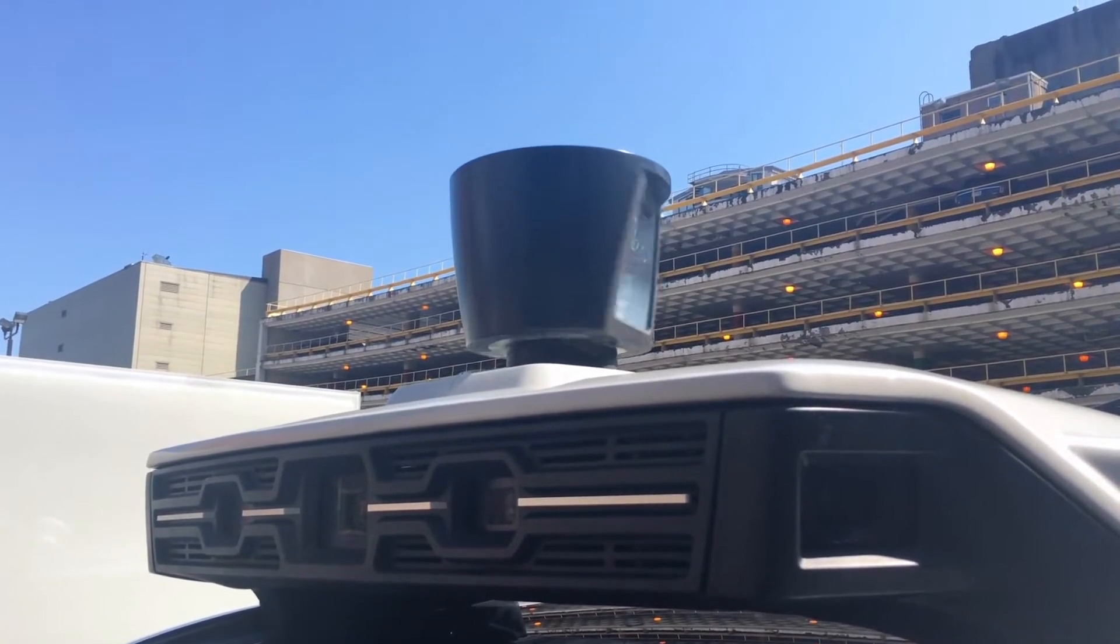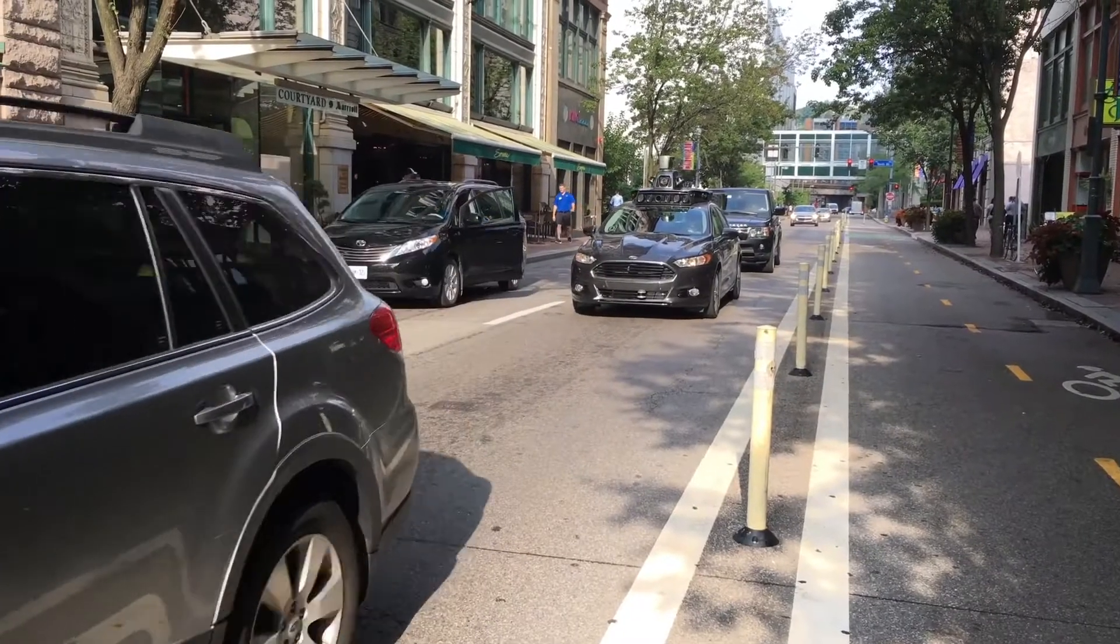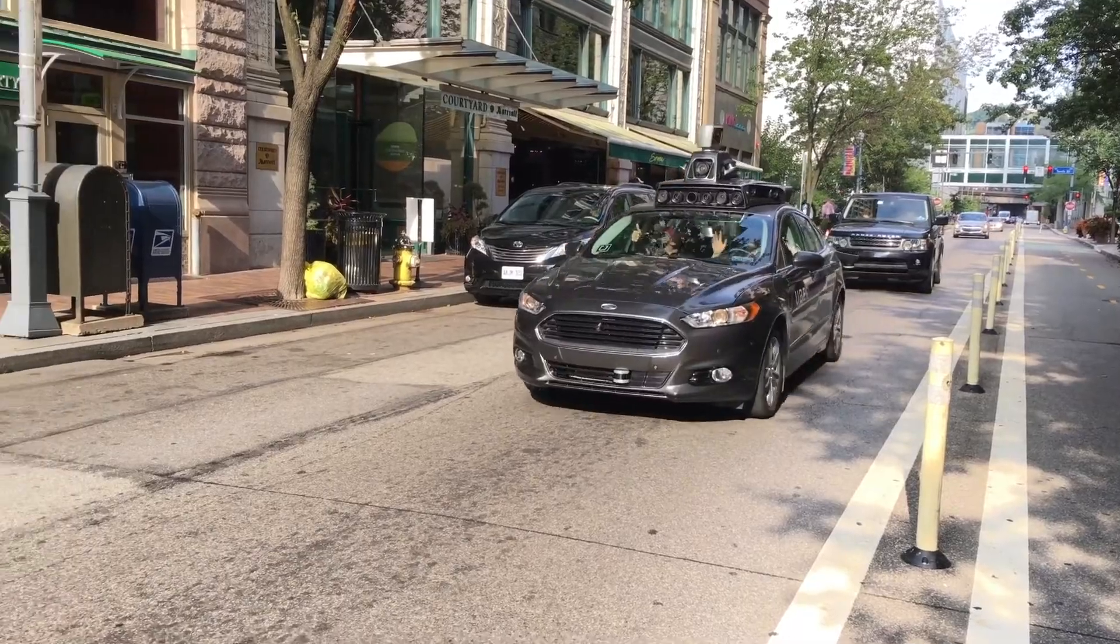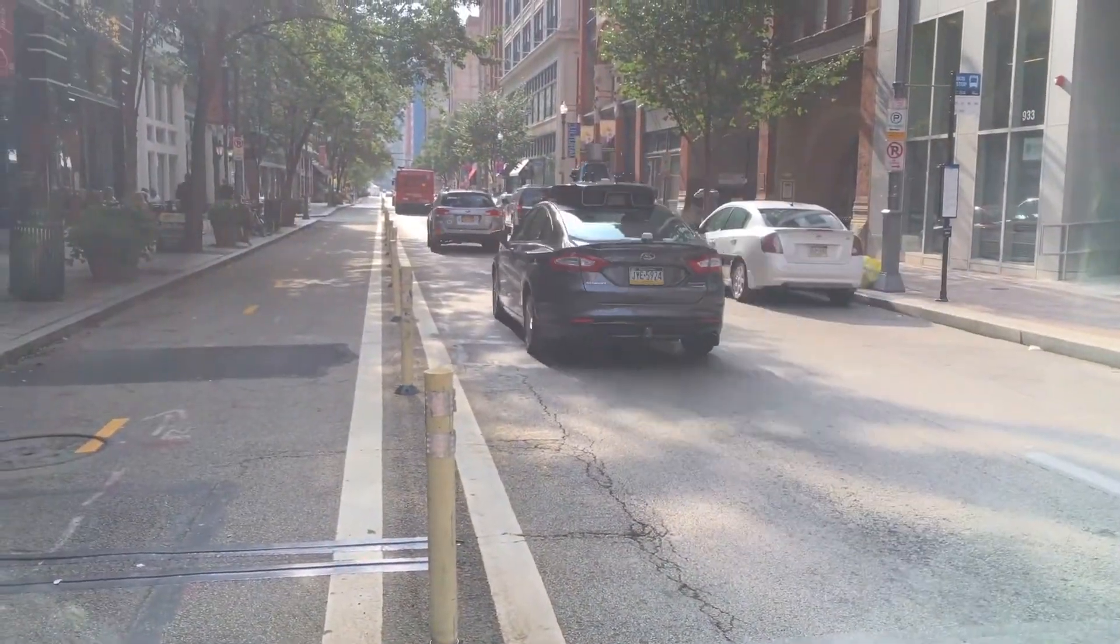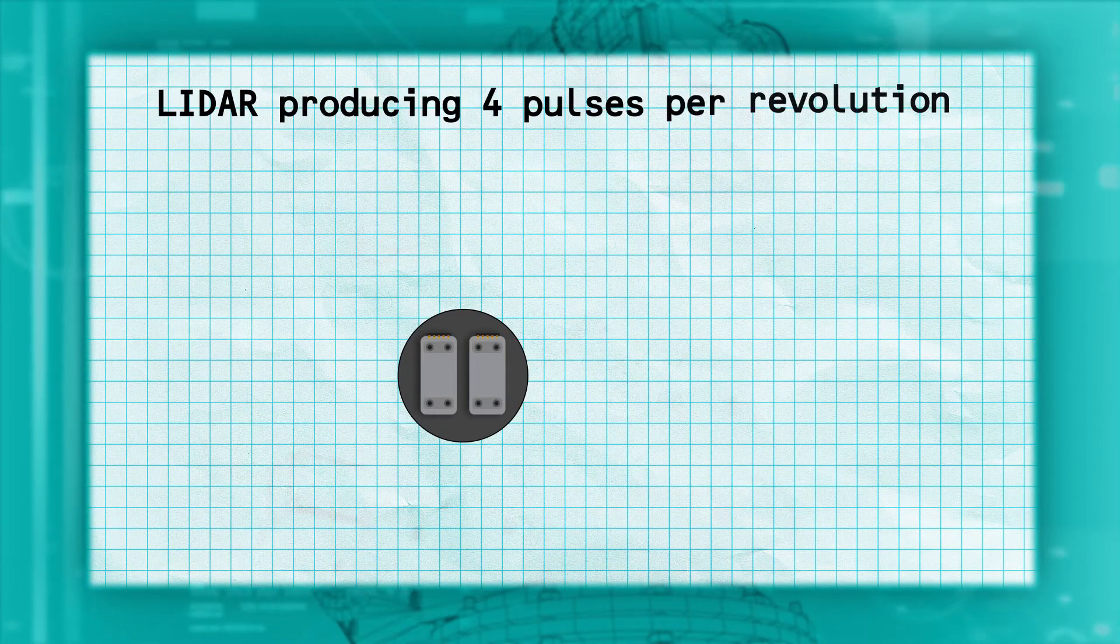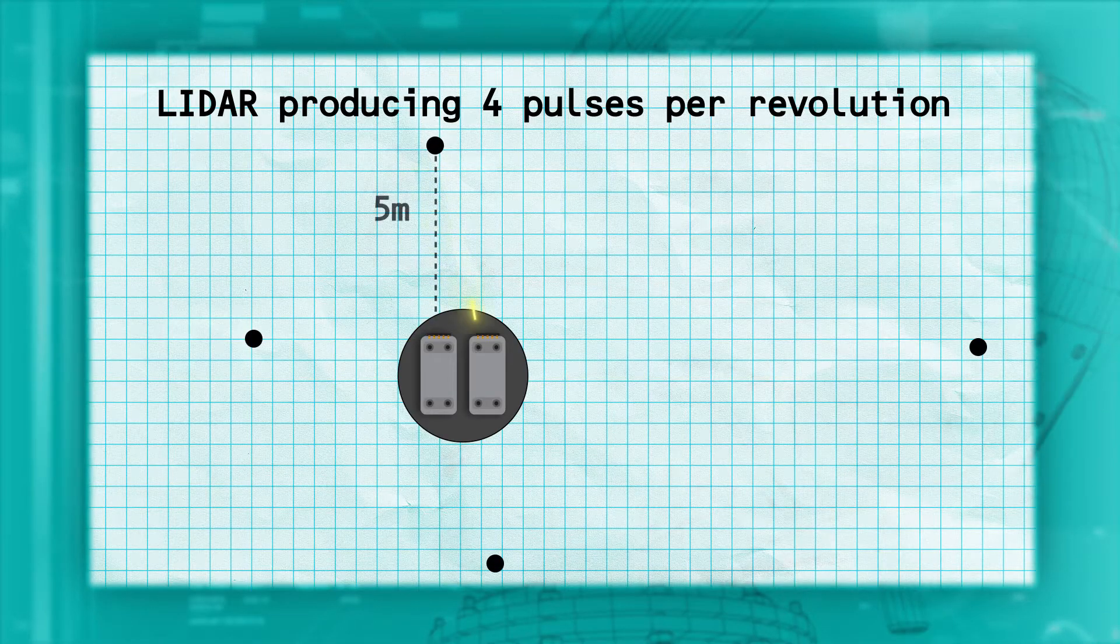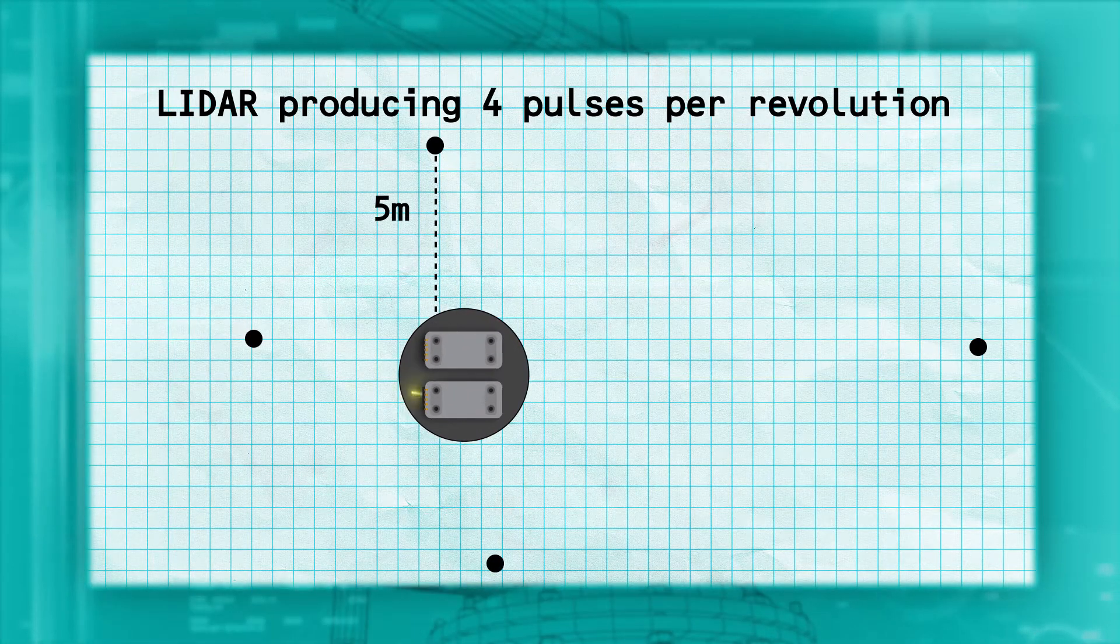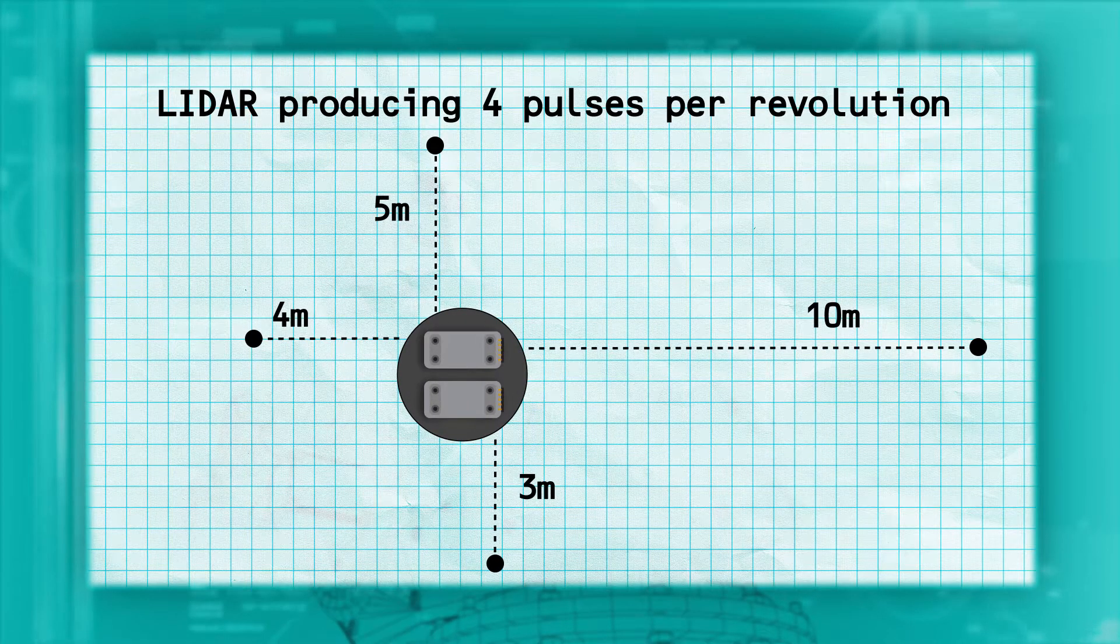The most common type of LIDAR for robots is the scanning or rotating LIDAR. This type of LIDAR spins around at high speed, allowing it to rapidly get measurements in many different directions. If our LIDAR system produces 4 pulses per revolution, it may tell us that there is an object 5 meters in front of us, 4 meters to the left, 3 meters behind us, and 10 meters to the right.